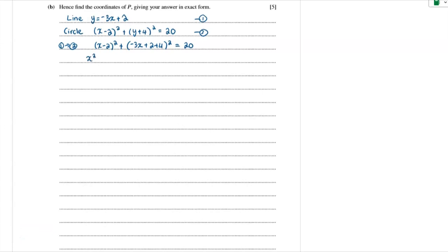That negative 3, in the brackets, it turns into negative 3x plus 6 squared. If we expand all the brackets, we'll get x squared minus 4x plus 4 plus 9x squared minus 36x plus 36 minus 20 equals 0.